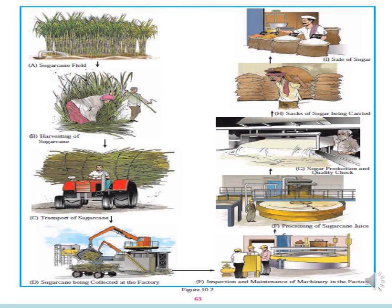Look at the pictures in figure 10.2 carefully. We are learning the classification of occupations. See if you can answer the following questions related to sugar production. Classify the occupations from primary to quaternary. Which raw material is used in the secondary occupation? Which is the finished product? Which are the services in tertiary occupations? Which picture is related to a quaternary occupation, and can you name that occupation?